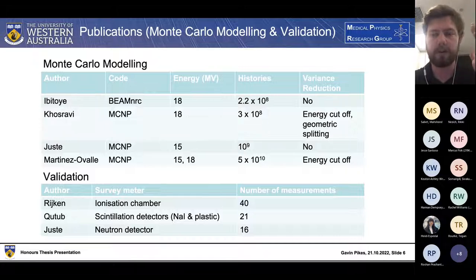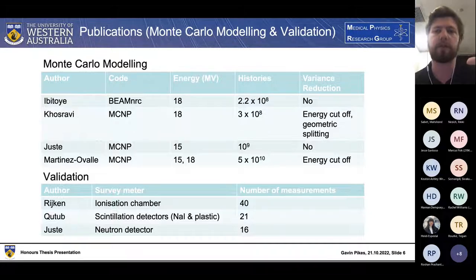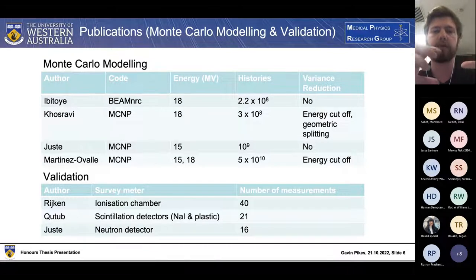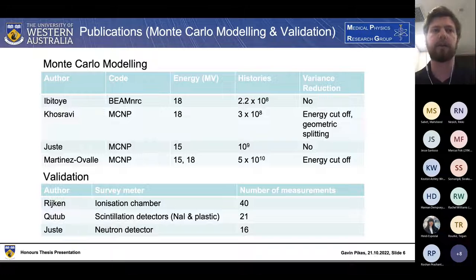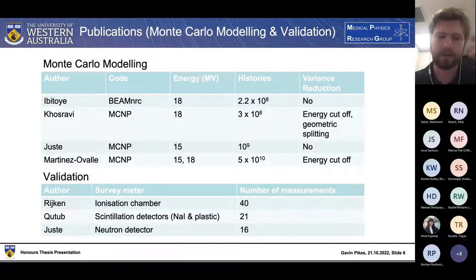The most popular validation method in the literature is to place survey meters within the bunker and compare results to the Monte Carlo simulation. Ideally we'd also look at radiation survey results from the commissioning of the linac bunker, but as these take measurements from outside the bunker room, the uncertainty becomes very high in the simulated results, as only a couple of particles in a billion are actually reaching the detectors being simulated.